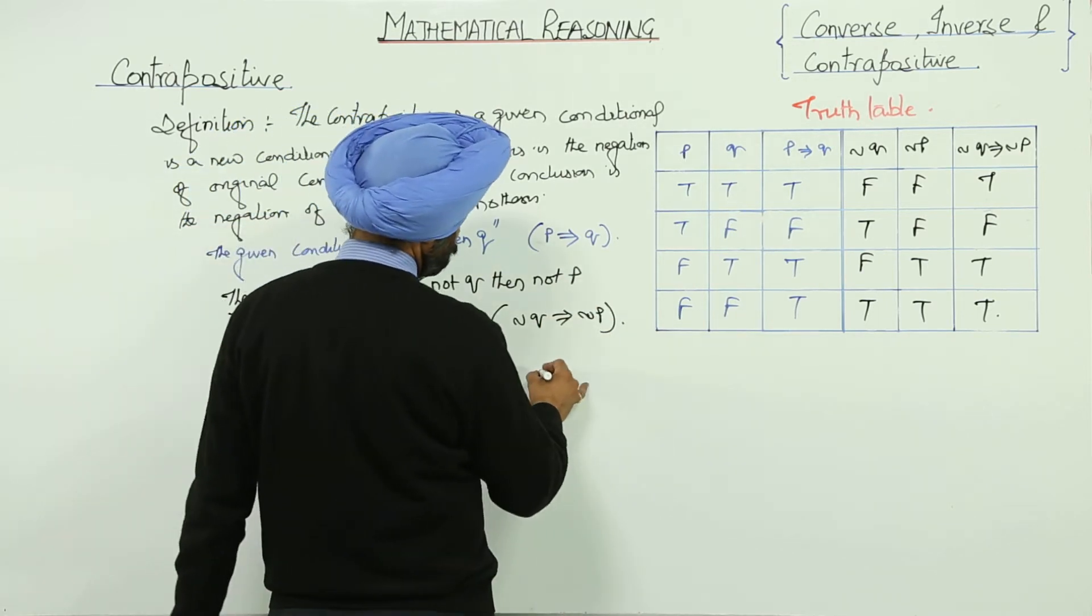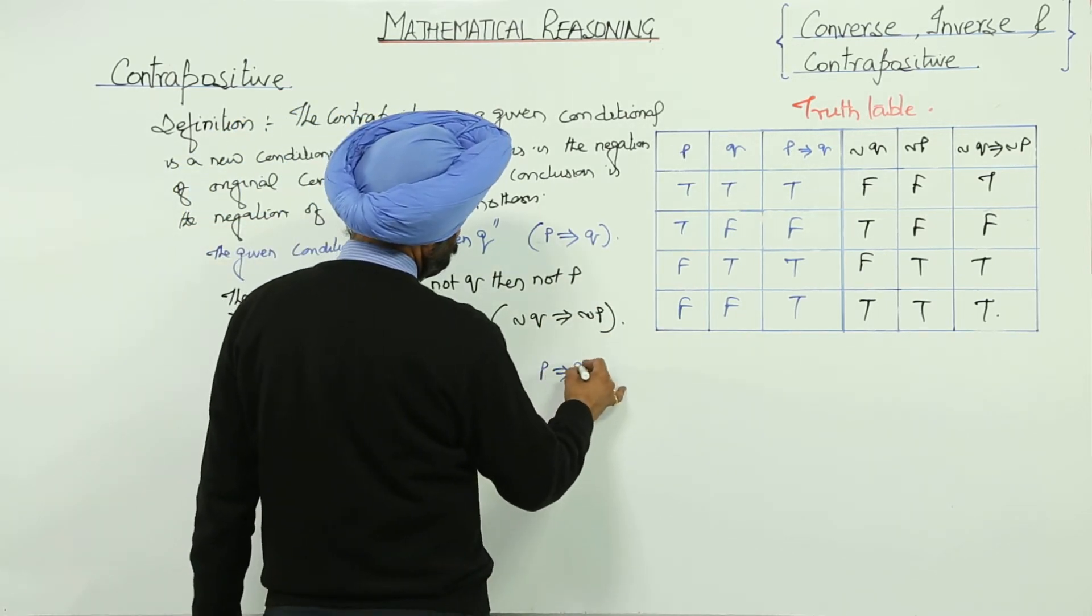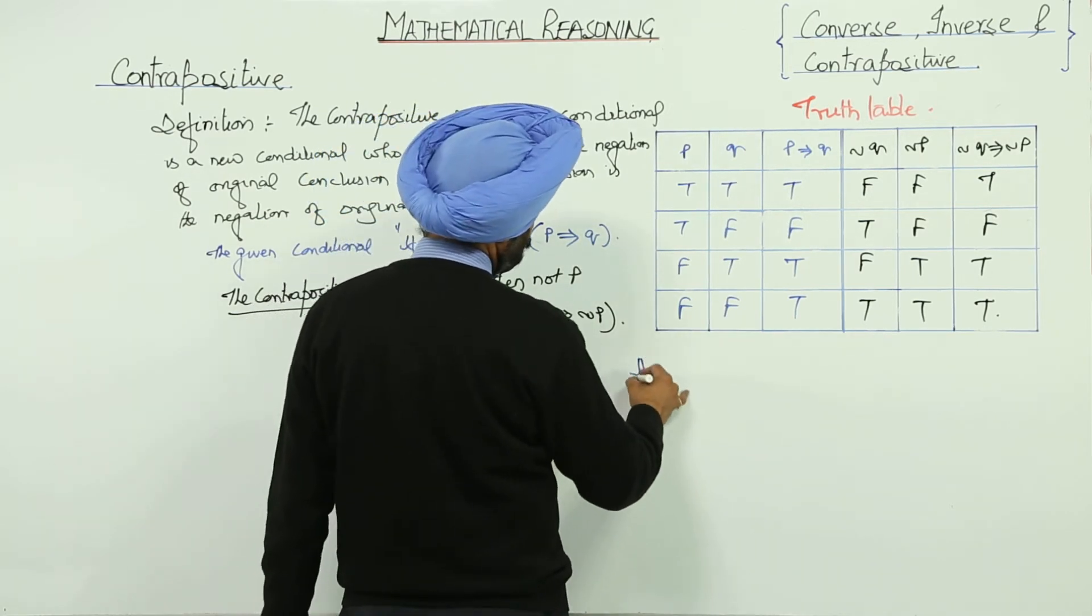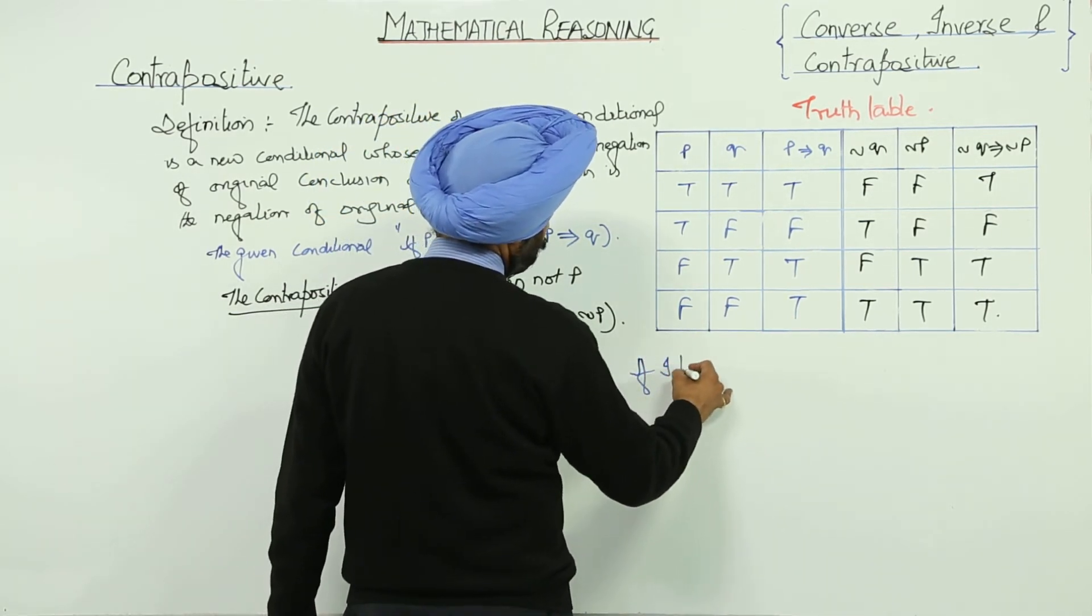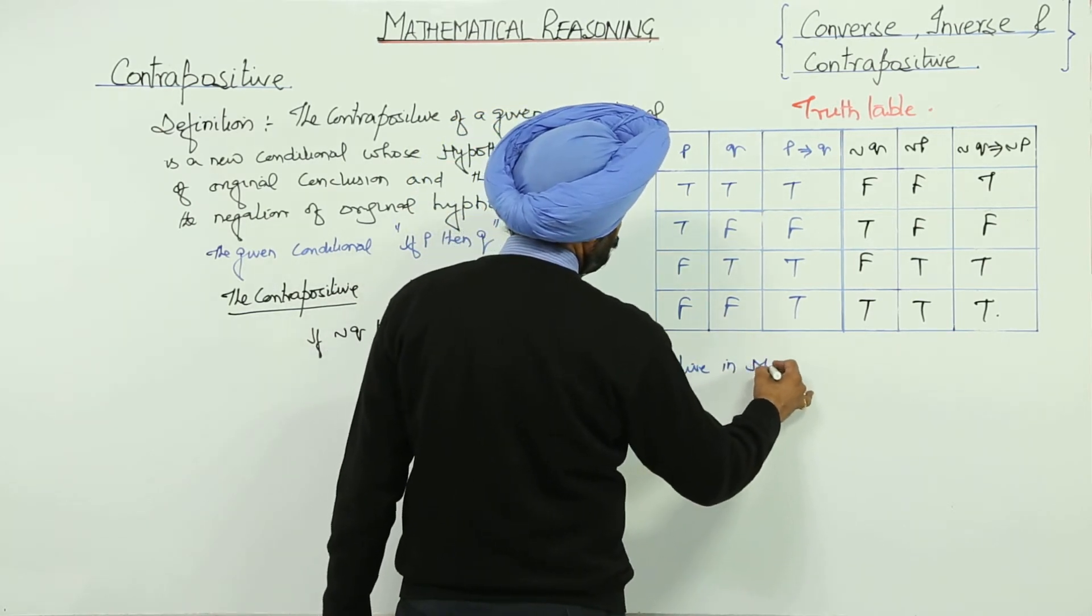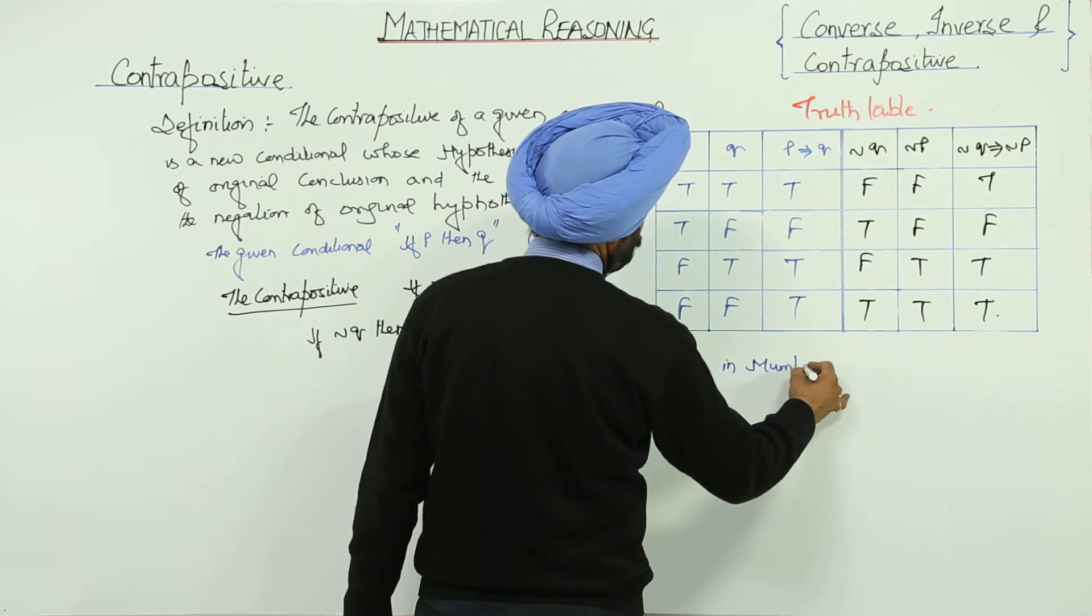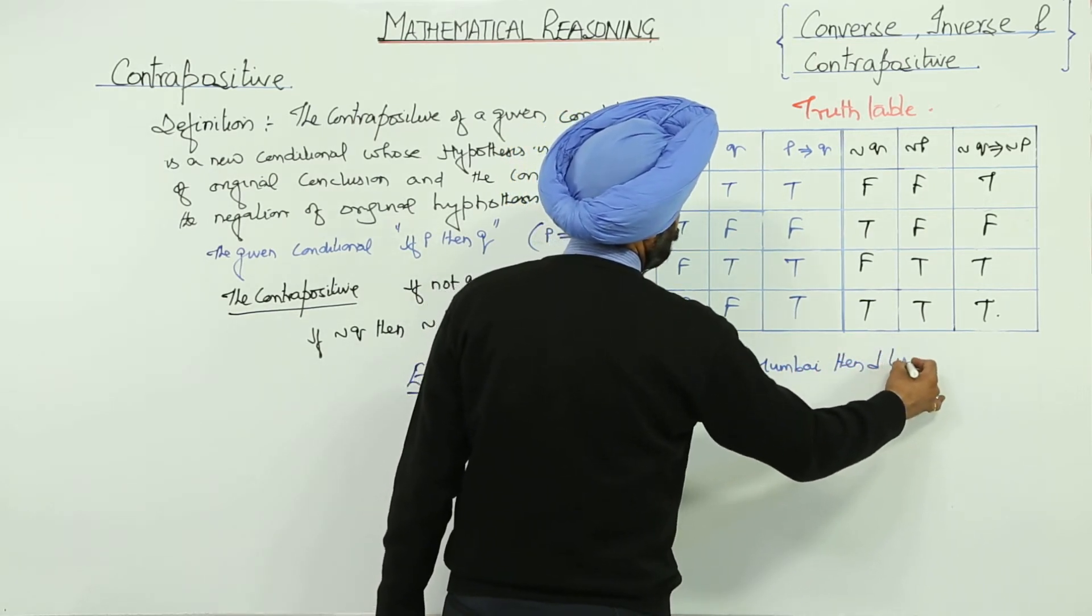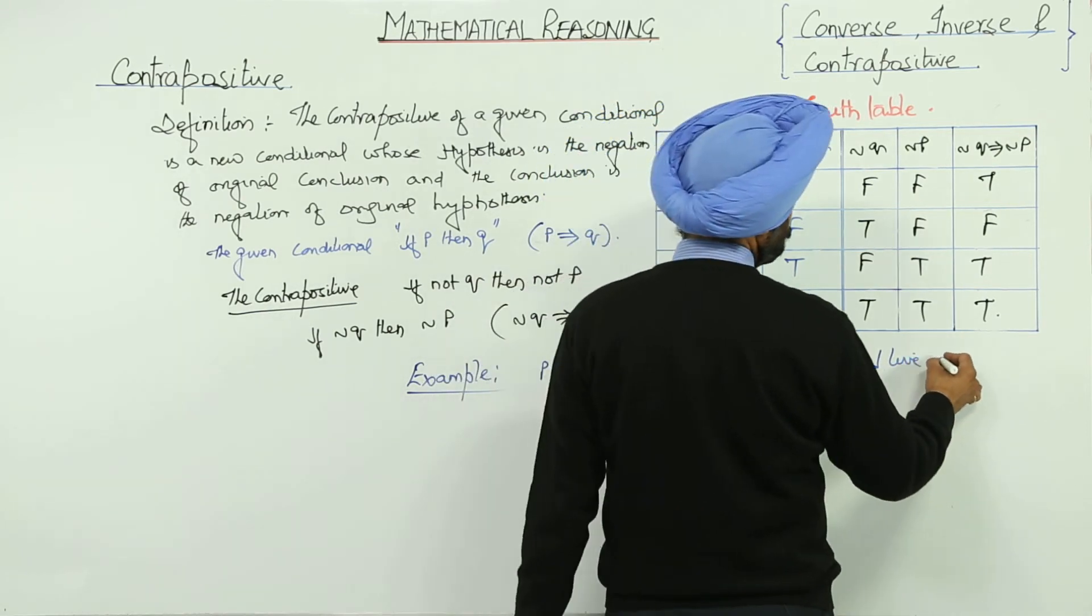Now, suppose P implies Q. Let's take an example. For example, if I live in Mumbai, then I live in India.